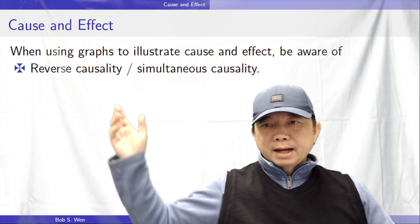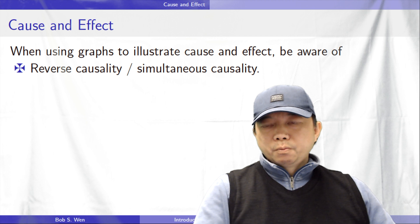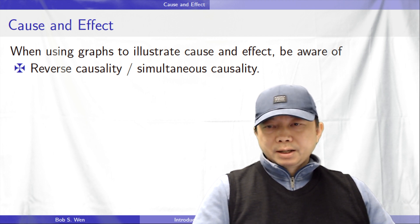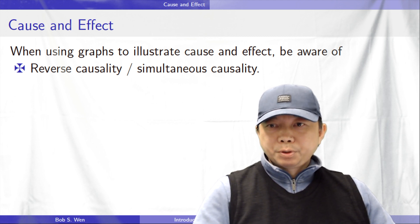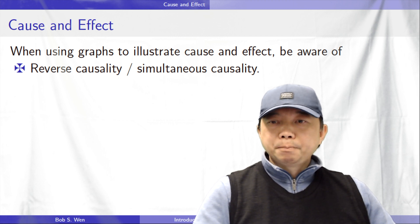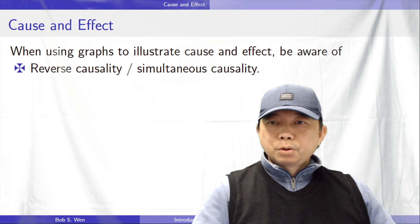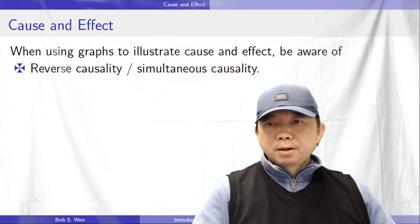Reverse causality happens when we make mistakes about causality by misreading its direction. A classic example is the positive correlation between the number of violent crimes and the number of police officers in major cities. Could we conclude that police causes violence? Of course not. It is more likely that more dangerous cities hire more police.